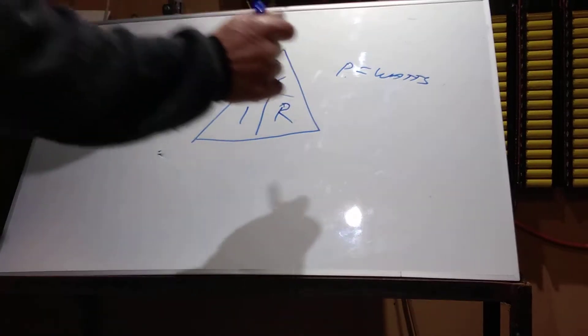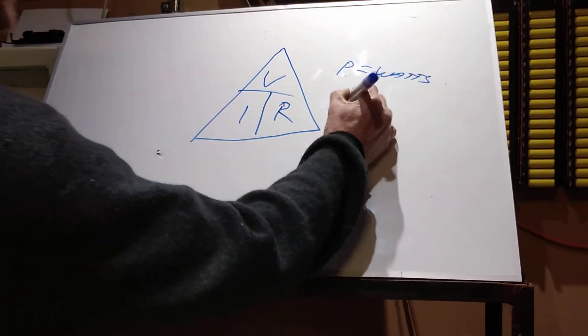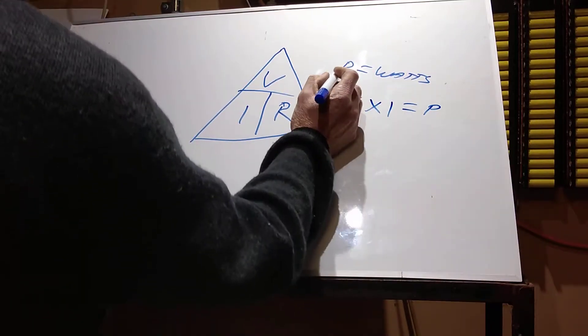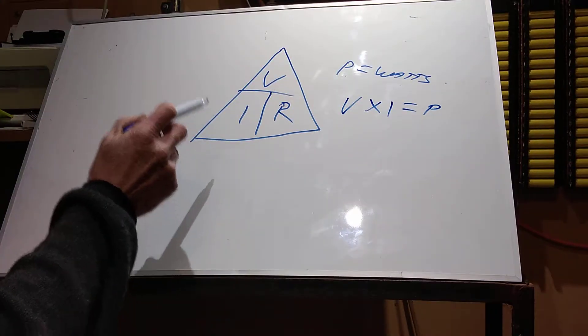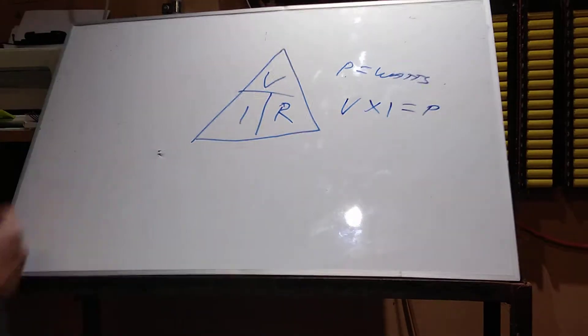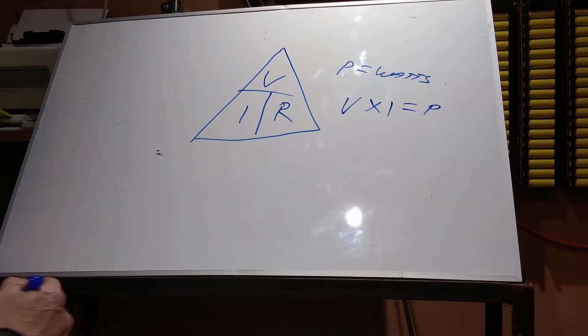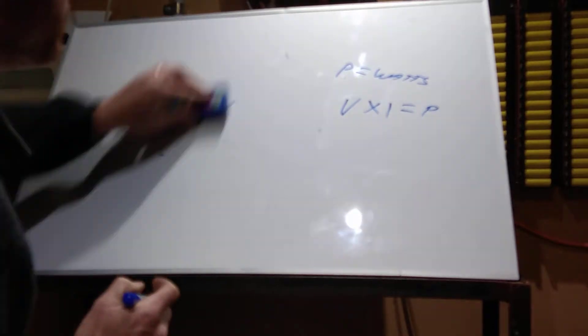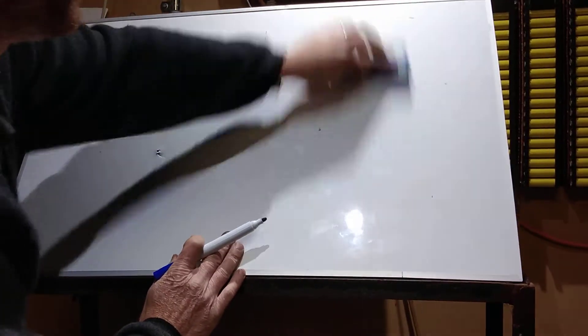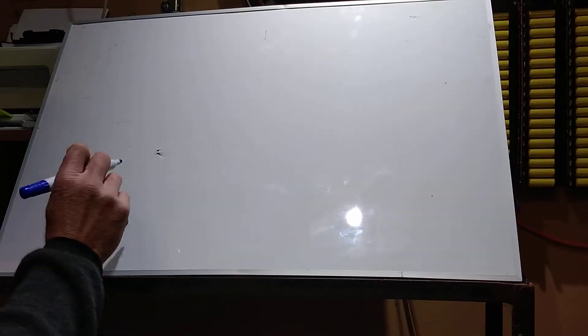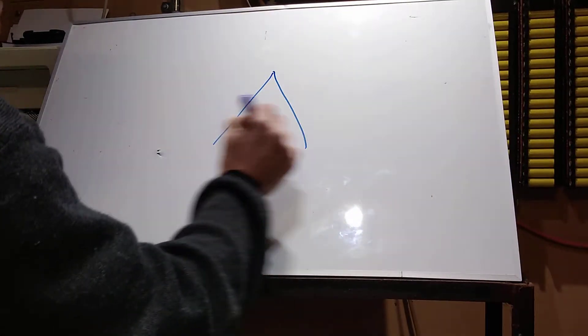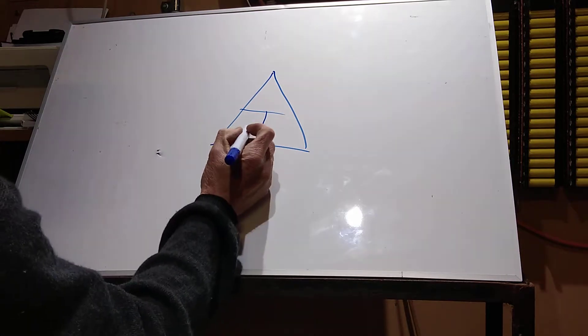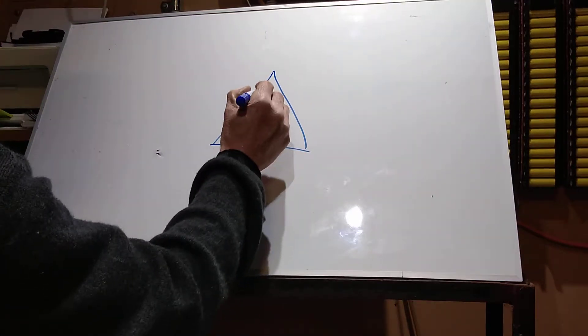Well, you can go V times I equals P. So P is basically the pressure, the result of putting the volts behind the current. So we can change this around a little bit. Since we don't deal with the resistance, we can put in our little triangle, V times I equals P.